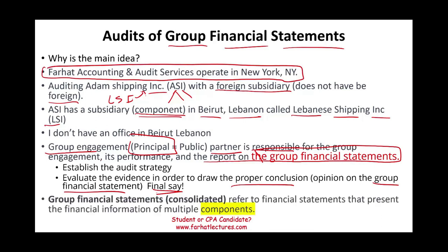What is a group financial statement? Again, think of them as the consolidated. They refer to the financial statements that present the financial information of multiple components. ASI could have multiple components — it doesn't have to be one component. I'm going to keep it with one component to make the illustration simple.